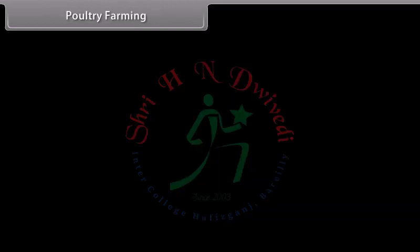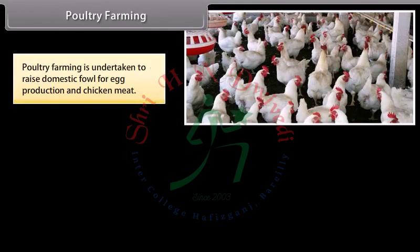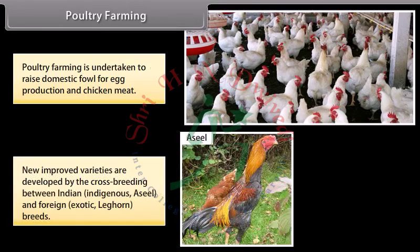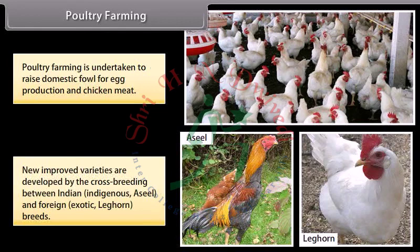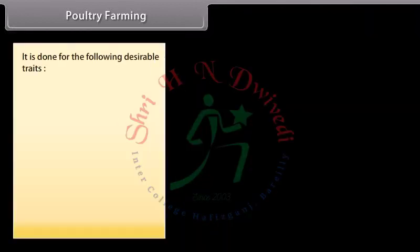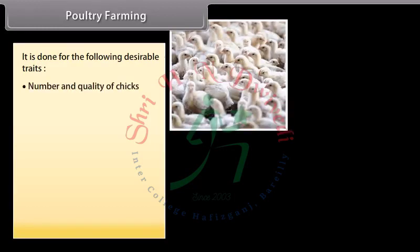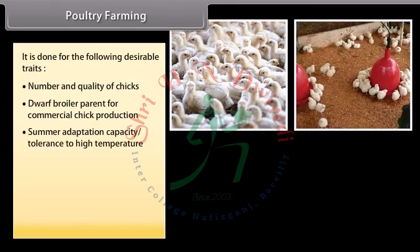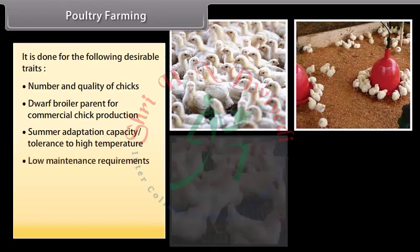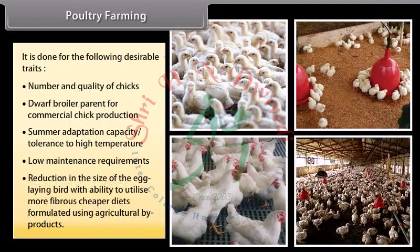Poultry farming is undertaken to raise domestic fowl for egg production and chicken meat. New improved varieties are developed by cross-breeding between Indian indigenous Aseel and foreign exotic Leghorn breeds. This is done for desirable traits such as number and quality of chicks, dwarf broiler parent for commercial chick production, summer adaptation capacity, tolerance to high temperature, low maintenance requirements, and reduction in size of the egg-laying bird with ability to utilize more fibrous, cheaper diets formulated using agricultural by-products.